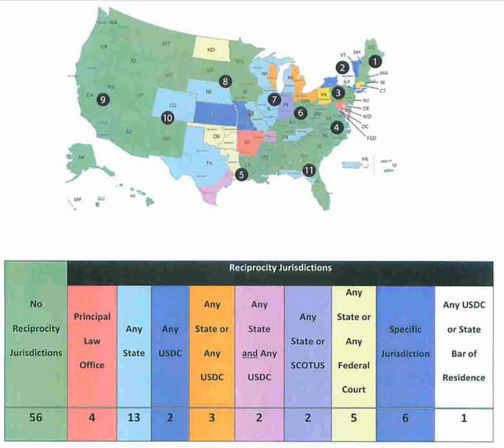There are other federal trial courts that have nationwide jurisdiction over certain types of cases, but the district court also has concurrent jurisdiction over many of those cases, and the district court is the only one with jurisdiction over civilian criminal cases. The United States Court of International Trade addresses cases involving international trade and customs issues. The United States Court of Federal Claims has exclusive jurisdiction over most claims for money damages against the United States, including disputes over federal contracts, unlawful takings of private property by the federal government, and suits for injury on federal property or by a federal employee. The United States Tax Court has jurisdiction over contested pre-assessment determinations of taxes.